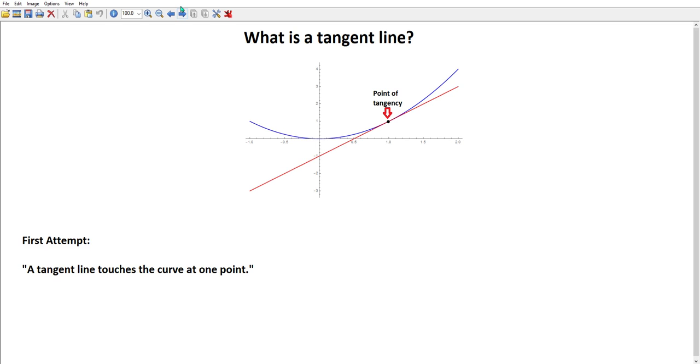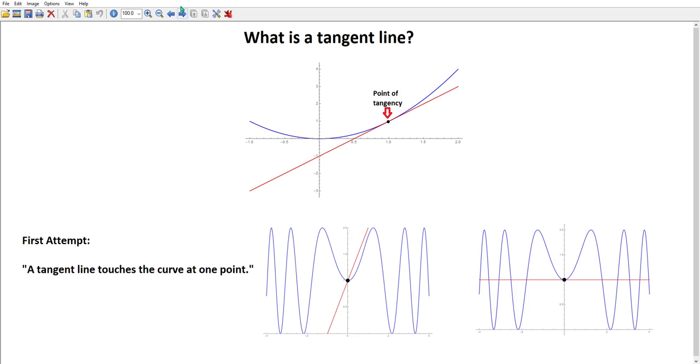Now our first attempt at description is that a tangent line touches the curve at one point, which is something that probably you've thought about previously. Unfortunately that does not characterize a tangent line.